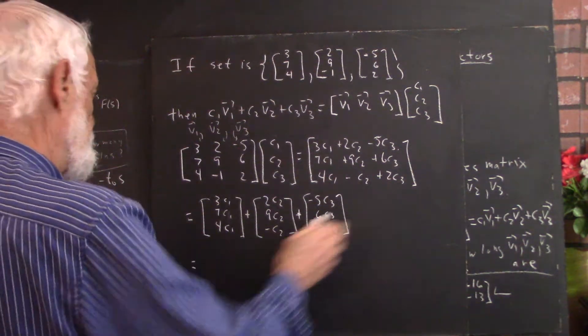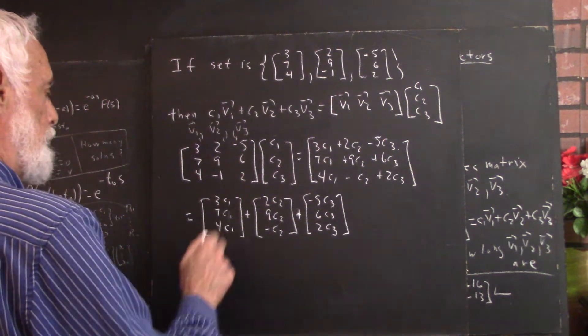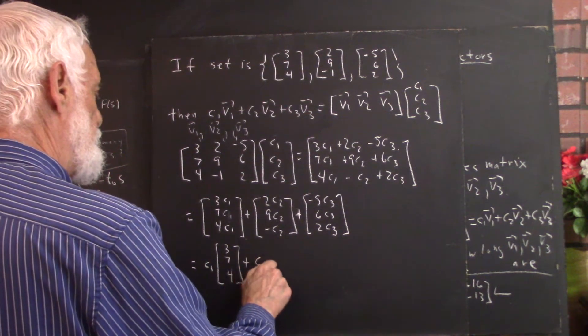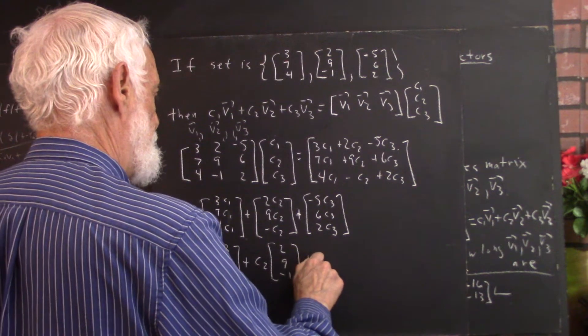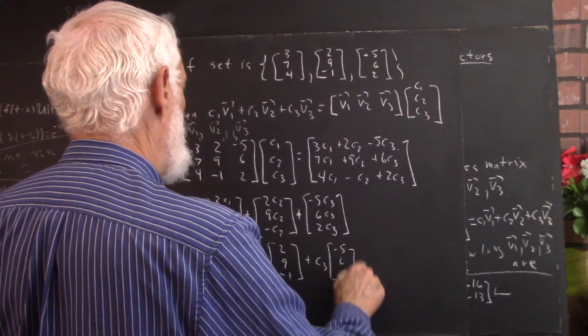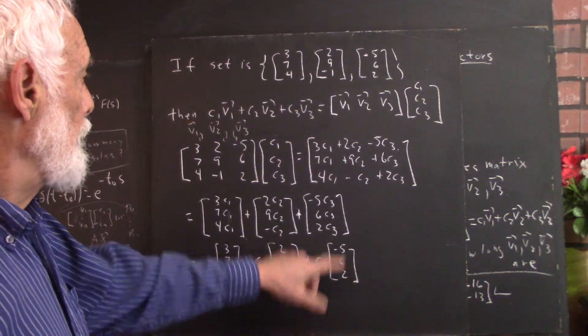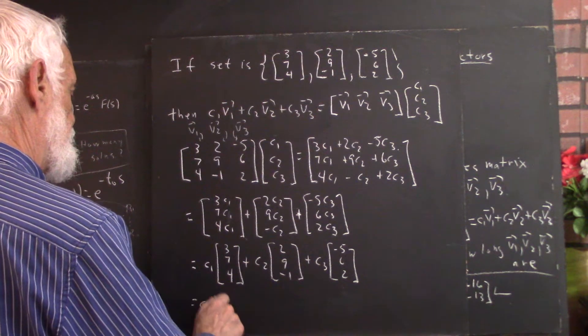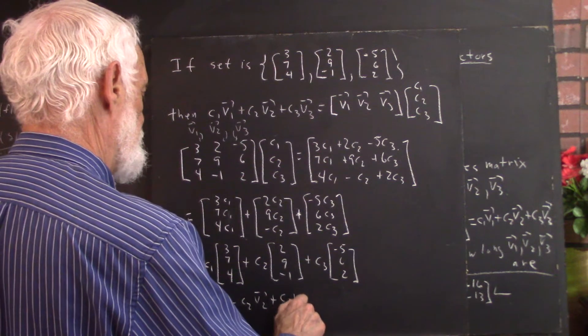I'm wanting to use this space over here, but it's not going to work. Okay, so now we factor the c1 out of this matrix, and we get 3, 7, 4. Which is your linear combination of the three vectors, so this is your c1*v1 + c2*v2 + c3*v3.